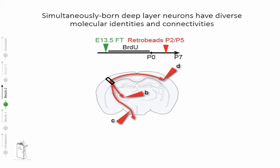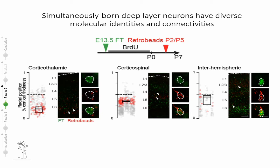As cortical neurons located in different layers of the neocortex are associated with different functions and connectivity, and since early born neurons of the cortex can populate different layers, we decided to investigate whether early born neurons would also assume a different set of connectivity and functions. We performed three different retrolabeling experiments on E13.5 FLASHTAC-injected brains: retrobeads injected in the contralateral cortex to label interhemispheric neurons, in the thalamus to label corticothalamic neurons in layer six, and in the spinal cord to detect corticospinal neurons in layer five. We could detect E13.5-born neurons projecting to the thalamus, to the spinal cord, and to the contralateral cortex.